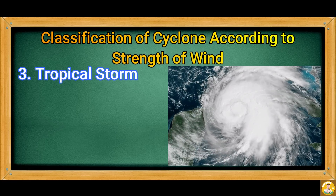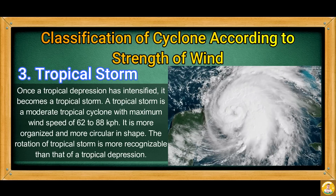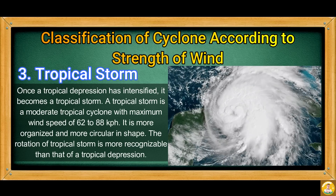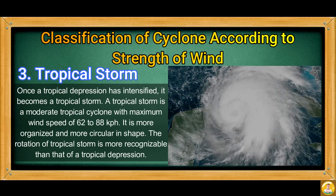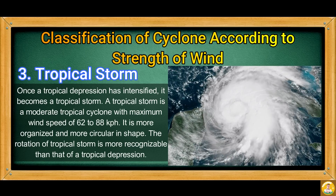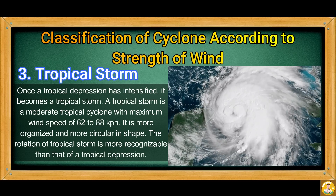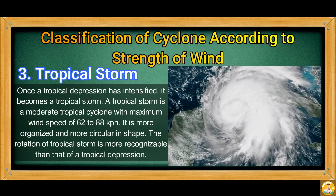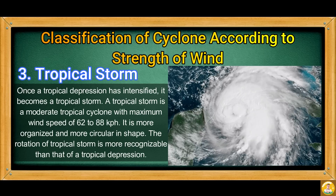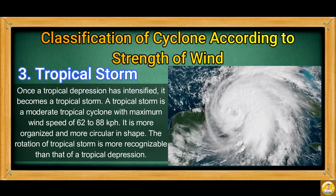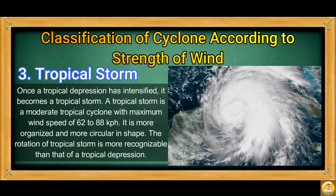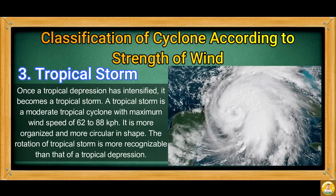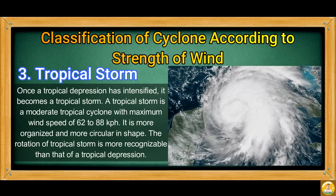Tropical Storm: Once a tropical depression has intensified, it becomes a tropical storm. A tropical storm is a moderate tropical cyclone with a maximum wind speed of 62 to 88 km per hour. It is more organized and more circular in shape, and its rotation is more recognizable than that of a tropical depression.